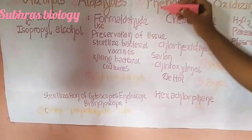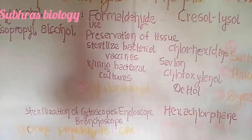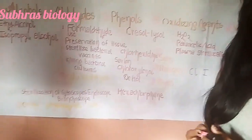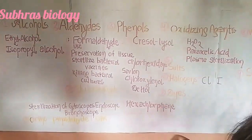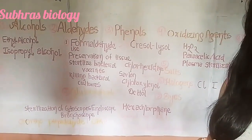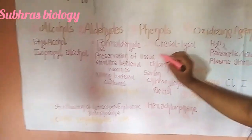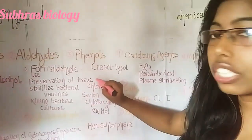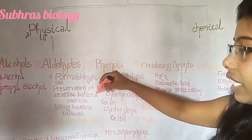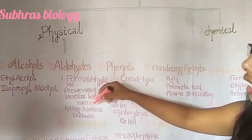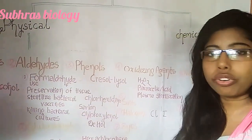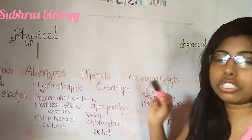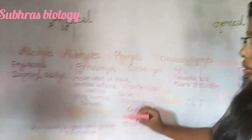Formaldehyde is bactericidal, fungicidal, and sporicidal. It is mainly used for: first, preservation of tissue for histopathological study; second, sterilizing bacterial vaccines; and third, killing bacterial cultures. Notably, 10 percent formaldehyde solution is called formalin, and formalin is used for preservation of tissue for histopathological study.